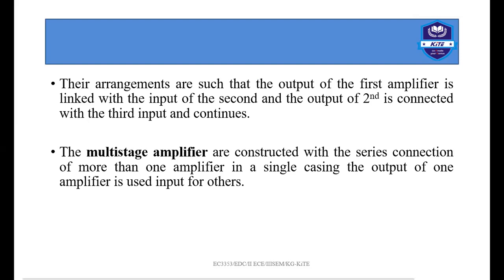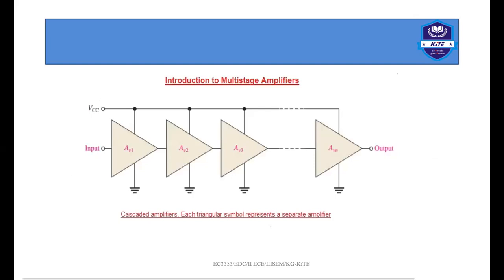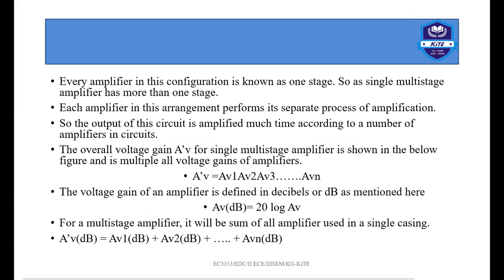For example, if you give 50 millivolts as an input to the first stage amplifier, it will amplify that 50 millivolts and give you a value greater than 50 millivolts at its output. That output from the first stage will then be given as the input for the second stage, which will amplify it further — and this process keeps going. The overall gain is calculated as AV = AV1 × AV2 × AV3, and so on, multiplying the voltage gains of all individual stages.